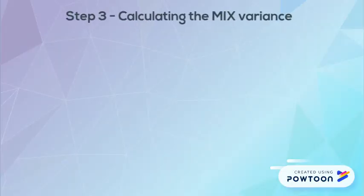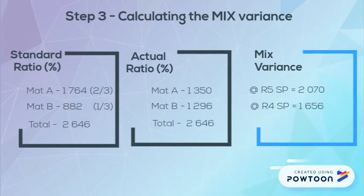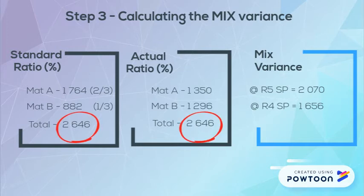For our mix variance we will be comparing the actual ratio to the standard ratio. We will use 2646 for both, which is our actual quantity in units, but we will apply different ratios. This gives us our mix variances when we calculate it.